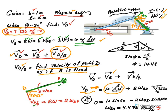If B is fixed, the velocity of D would be r·omega — r is 2, so L equals 2 meters — and omega is omega BD. Why is omega BD counterclockwise? Because you look at the directions of velocity of B and velocity of D: at this instant, if AB is rotating clockwise, BD has to rotate counterclockwise.